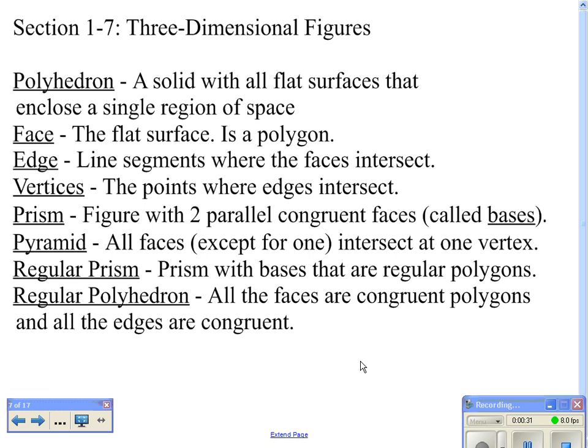A prism, specifically, is a figure that has two parallel congruent faces, which are called bases. A pyramid is where all the faces, except for one, intersect at one vertex, or where there is one base and all other faces intersect at a vertex. A regular prism is a prism where the bases are regular polygons. A regular polyhedron is where all of the faces are congruent polygons and all the edges are congruent.